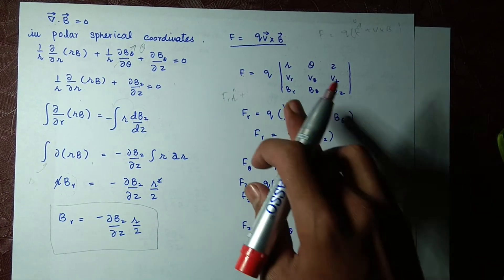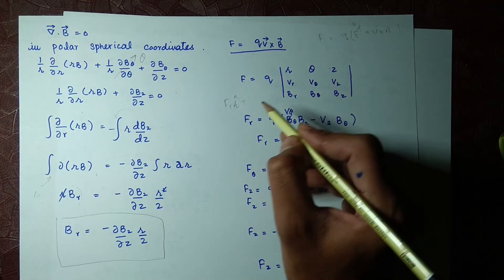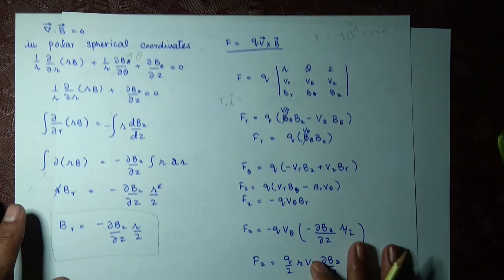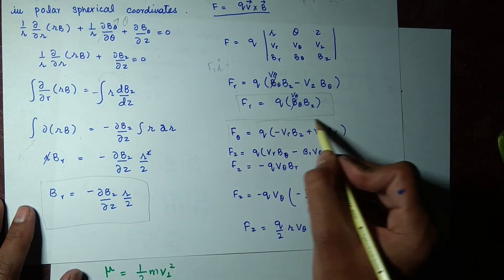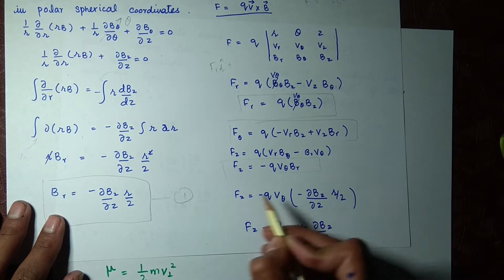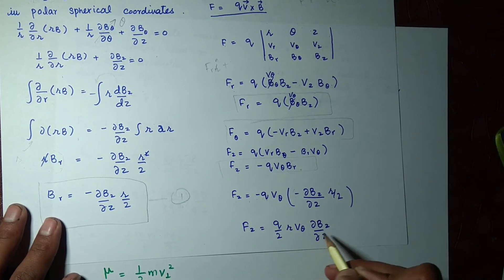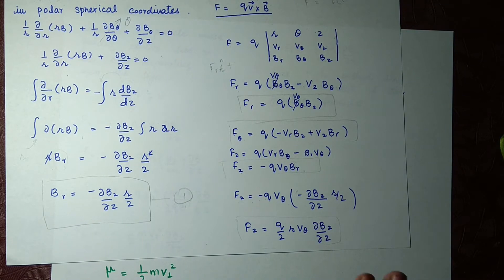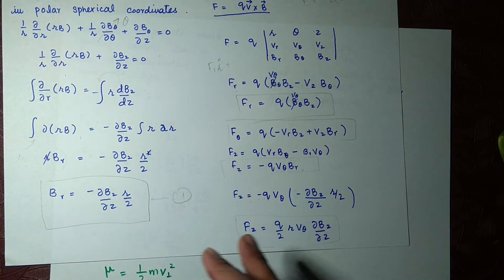Comparing components gives us F_R, F_θ, and F_Z. Substituting the value of B_R from equation one into these expressions, F_Z becomes: F_Z = −Q·V_θ multiplied by the B_R expression. After rearranging, we write the final form of F_Z. This completes the second step of our derivation.